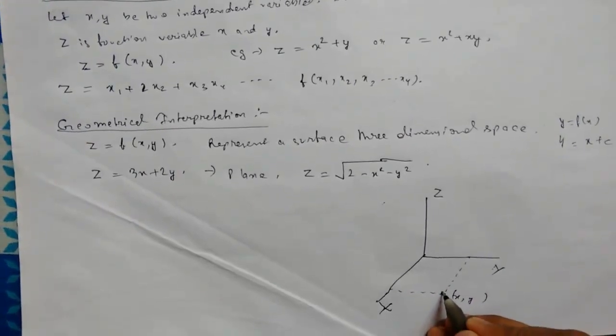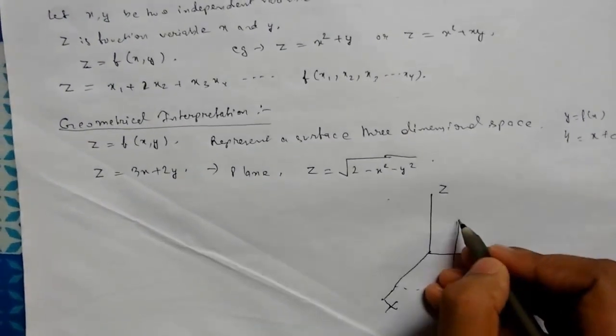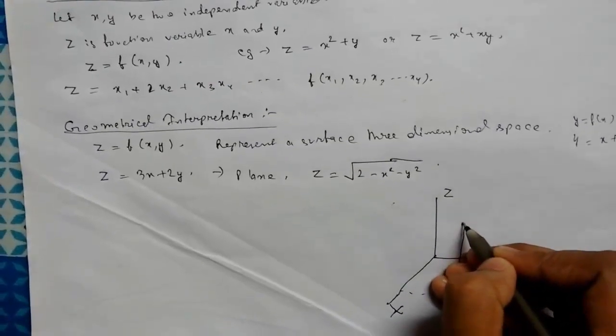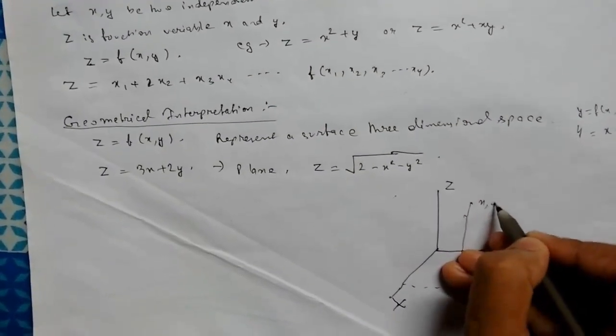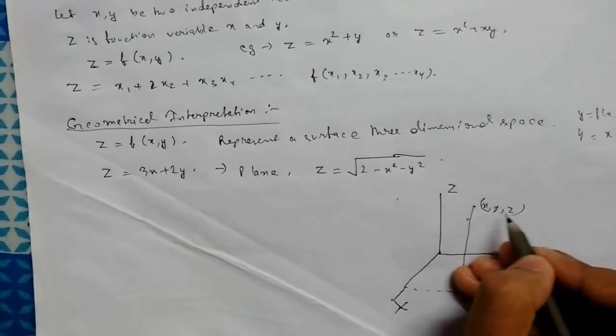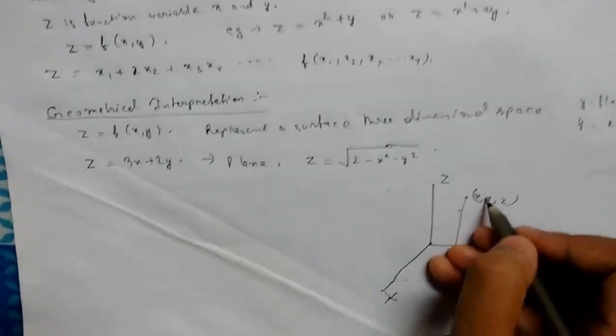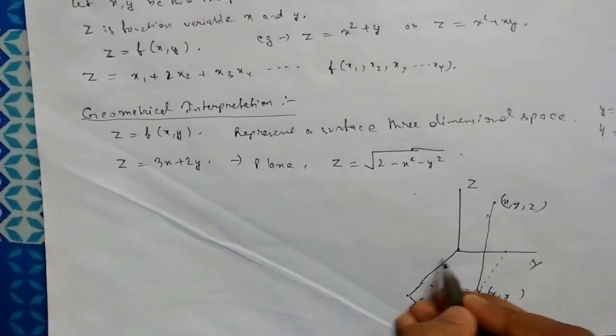Suppose this is the perpendicular to x, this is the perpendicular to y. For this function we get a surface in the z which corresponds to that. So here it will be x comma y comma z. This is o.